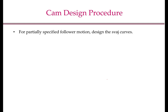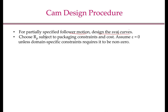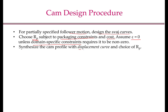With these definitions, let us get an overview of the entire cam design procedure. The first step is to design the SVAJ curves for a partially specified follower motion — this is what we did in the last two modules. Then we choose the prime circle radius or base circle radius, subject to packaging constraints and cost. We can initially assume that the offset or eccentricity is zero, unless domain-specific constraints require it to be non-zero. We then synthesize the cam profile using the displacement curve and the chosen Rp.